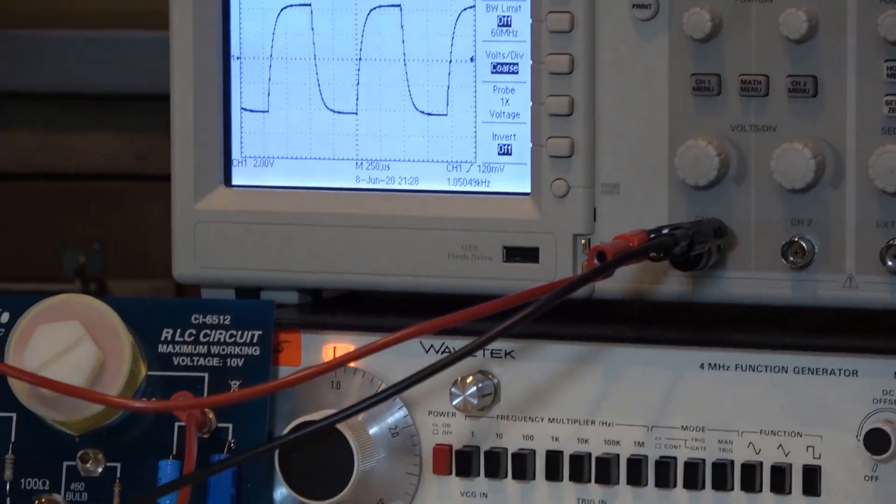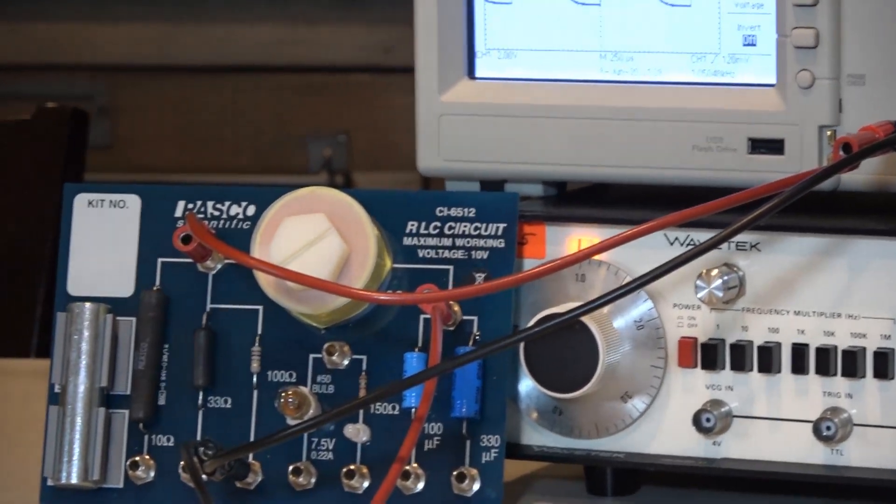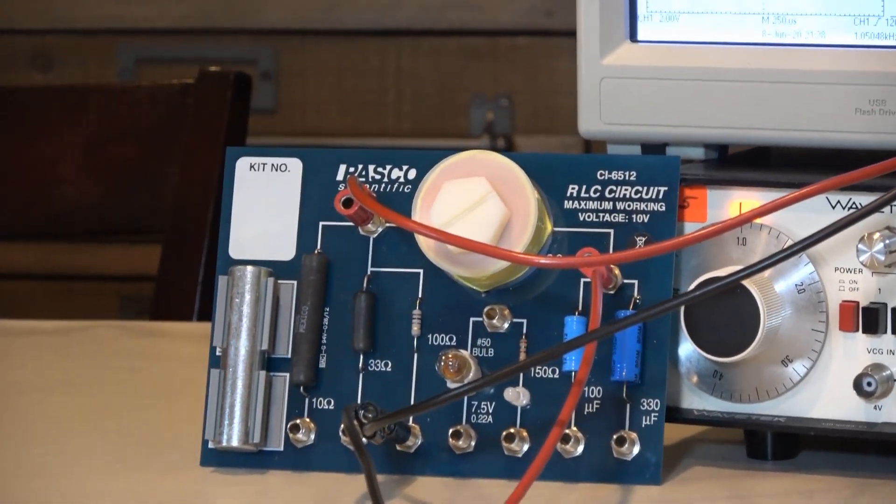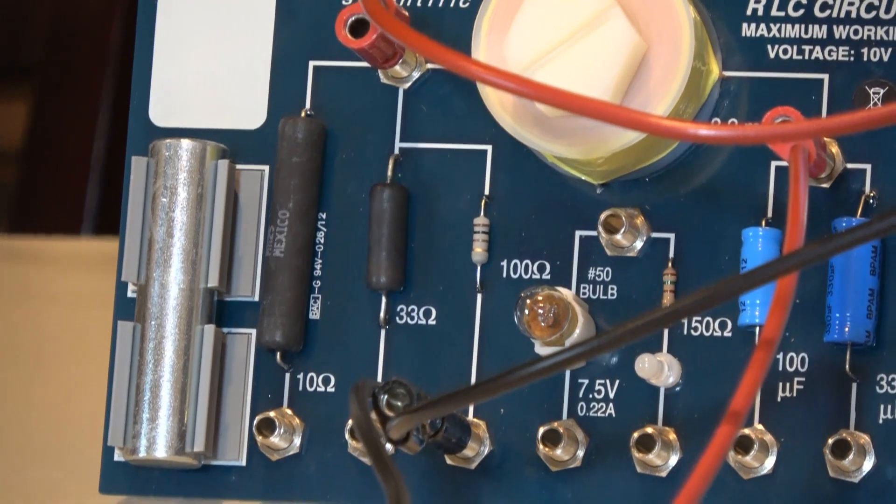If we follow the leads back to our circuit board, we can see that the red wire is hooked up to one side of the resistor, and the black wire is hooked up to the other side.